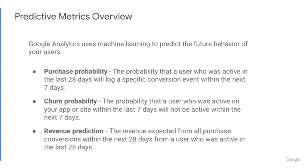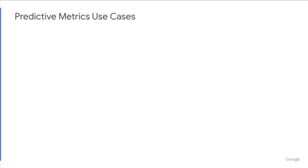Nobody can read the future, but based on users' past behavior, we can create a machine-learned model that can predict what users might do. That's Google Analytics predictive metrics, built on Google machine learning to let you anticipate your users' behavior. Now let's talk about some use cases for predictive metrics. You can use predictive metrics to analyze customer activity in the Explorer workspace.